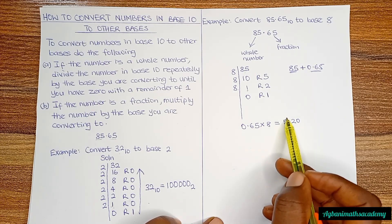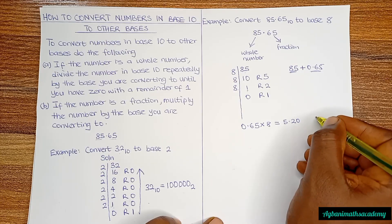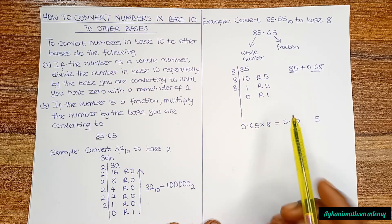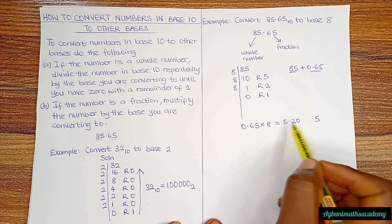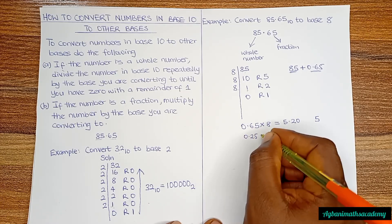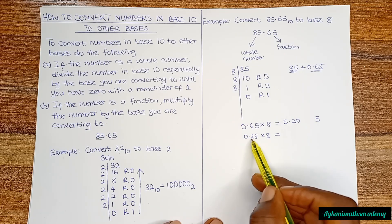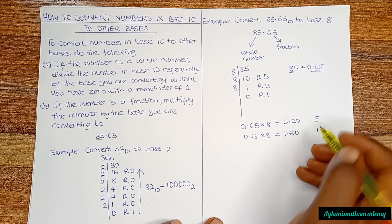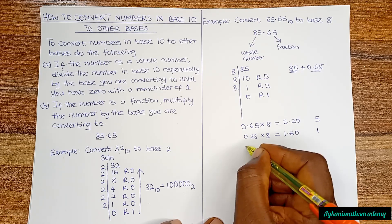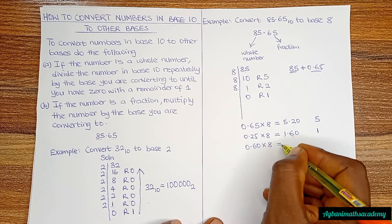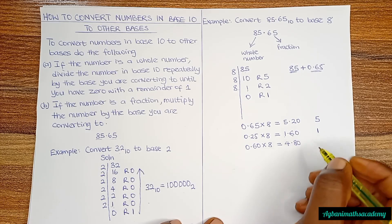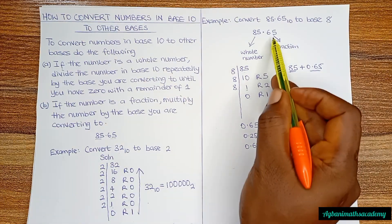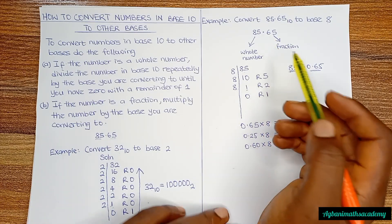From 5.20 we pick out the whole number 5 and bring down the remaining 0.20. We multiply 0.25 by 8, which gives 1.60 — we pick out 1 and bring down 0.60. Then 0.60 multiplied by 8 gives 4.80, so we pick out 4. We can stop here since it is a decimal and we are allowed to round off.